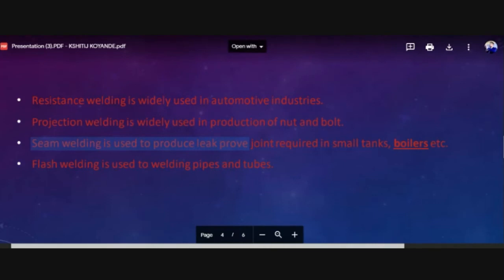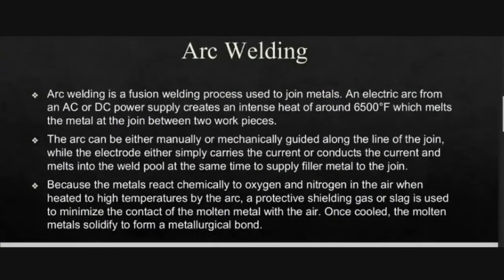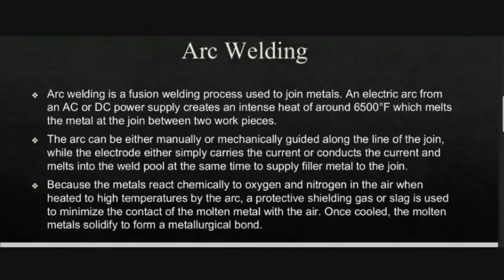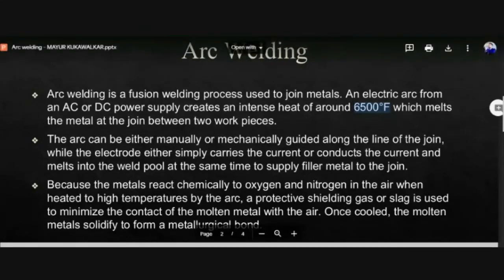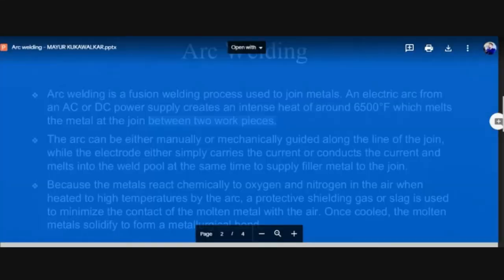The next type we are going to see is arc welding. The difference between arc welding and resistance welding is that in arc welding, heat is created to melt the metal at a quite high temperature. This high temperature melts the metal so that we can join the two work pieces. Most of the time we have seen arc welding being used by fabricators in workshops making grills and structures.